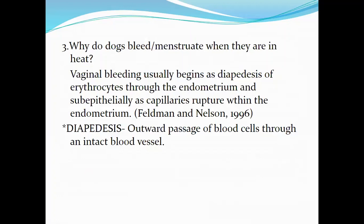Why do dogs bleed when they are in heat? This is due to vaginal bleeding, which usually begins as diapedesis of erythrocytes — red blood cells — through the endometrium, and some epithelial capillaries rupture within the endometrium. This is according to Feldman and Nelson.